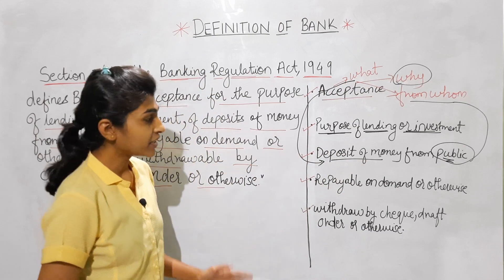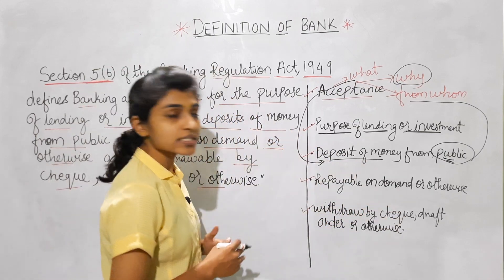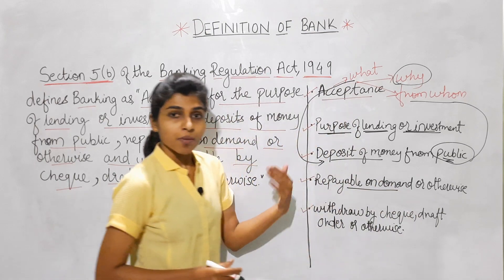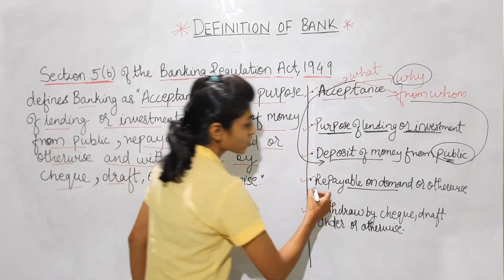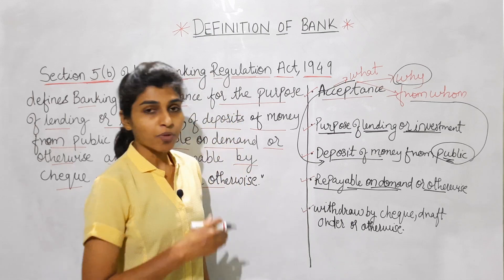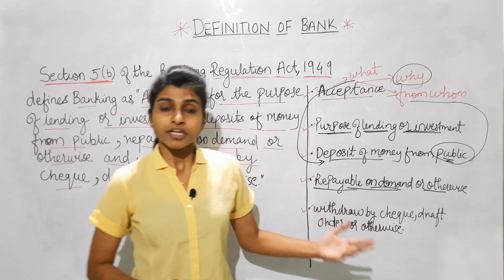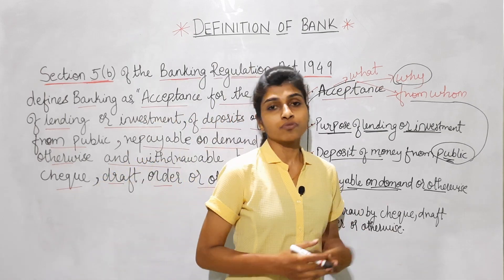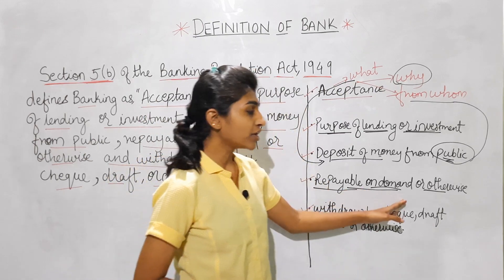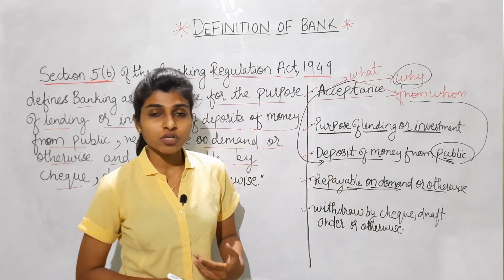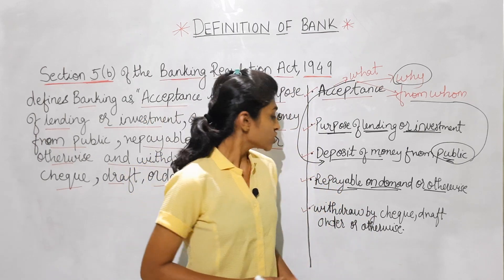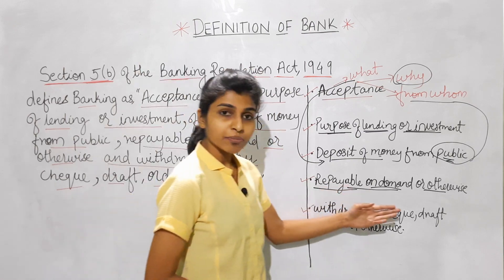The bank accepts deposits of money from the public, and these deposits the bank repays to the customer on demand or otherwise. Repayable means it returns the money on demand or otherwise. For example, if you have a savings account, whenever you go and fill the withdrawal slip, the bank will return you the money — that is repayment on demand. There are also deposits like fixed deposits and recurring deposits, which the bank returns after the due date or maturity date. So the bank repays deposits on demand or otherwise.